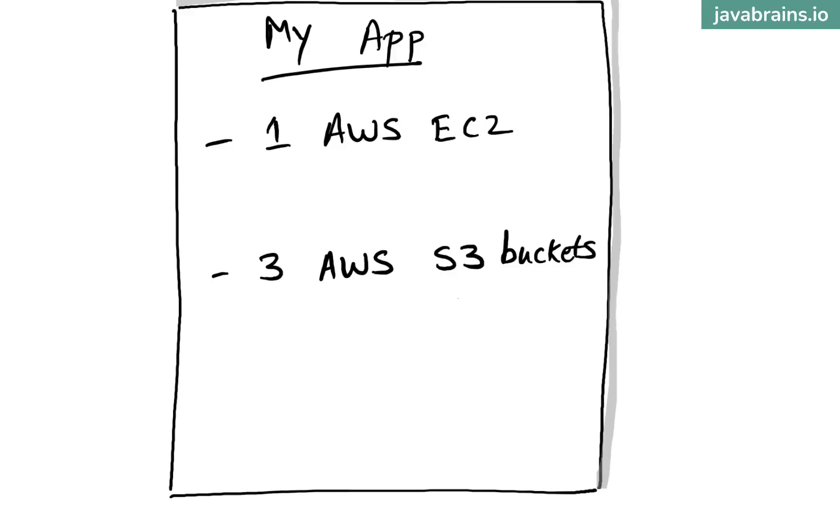I know what you're thinking: great, more code for me to learn and write and maintain. But as bad as these UIs are, they're still manageable — should I really be coding this whole thing? Well, let's say you're working on AWS and you need to create one EC2 instance and three S3 buckets. If you don't know what exactly those are, don't worry — just think of them as a bunch of infrastructure items for you to create.